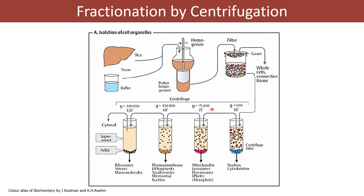First, at 600 rpm for about 10 minutes, the sample is centrifuged, and you will see the nucleus getting separated — other components remain in the supernatant, and the precipitate contains the nucleus. Transfer the supernatant and increase the speed to about 15,000 rpm. Spin for about 15 minutes and you will find mitochondria, lysosomes, peroxisomes, and possibly chloroplasts being separated at this g-force.